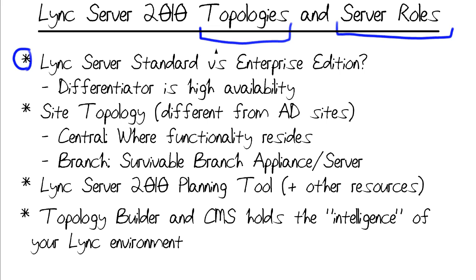Each edition is going to have its own client access license, or CAL, associated with it. You'd be surprised how much functionality you do get with Standard — most of the lion's share of what you get in Enterprise. Really, the big differentiator is whether you have a requirement for high availability.